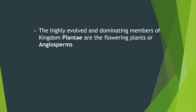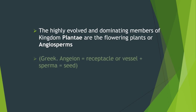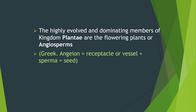Let us see what are Angiosperms. The highly evolved and dominating members of Kingdom Plantae are the flowering plants. Flowering plants are also called as Angiospermic plants. The word Angiosperm is derived from a Greek word — angion means a receptacle or a vessel, which is nothing but the ovary. And inside this ovary, this forms the fruit later, and the ovules after fertilization form the seeds.